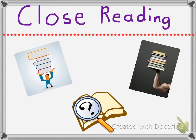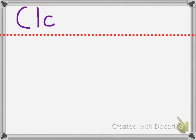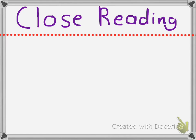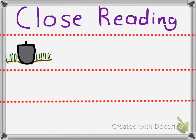We look in the text, re-reading and analyzing it very carefully, and we dig deeper into the text to really strengthen our understanding. Close reading is broken down into three phases. In the first phase, we're going to just scratch the surface and take a look at the gist of the text, the big picture.